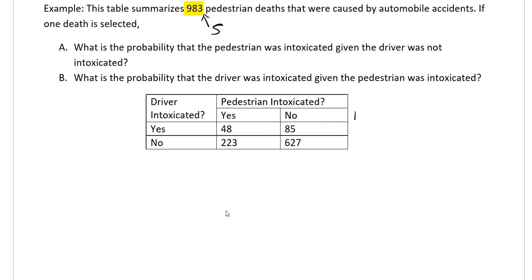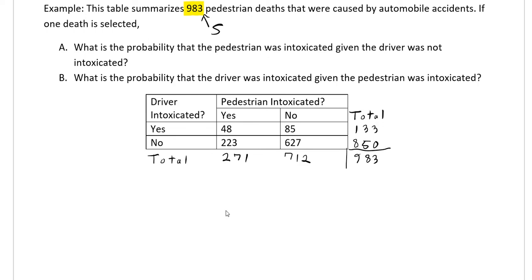We also need to find the totals. For pedestrian intoxicated: 43 plus 223 gives 271. For pedestrian not intoxicated: 85 plus 627 gives 712. Adding those: 271 plus 712 equals 983 — checks out. Adding the rows: 43 plus 85 gives 133 (driver intoxicated total), and 223 plus 627 gives 850 (driver not intoxicated total). These also sum to 983. I'm building the full sample space with all possible values I could work with.